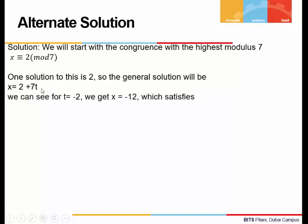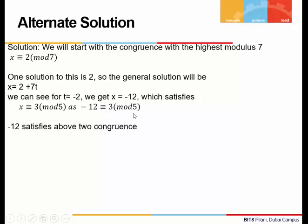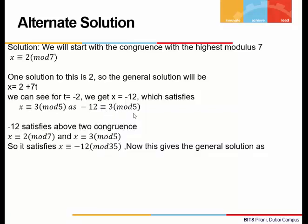Now, if I take t as -2, we will get x = -12, and this will satisfy the second congruence, x ≡ 3 (mod 5). If you put -12 in this congruence, we see -12, and we bring the 3 on the other side, -15 will be divisible by 5. So -12 now satisfies two congruences: x ≡ 2 (mod 7) and x ≡ 3 (mod 5).